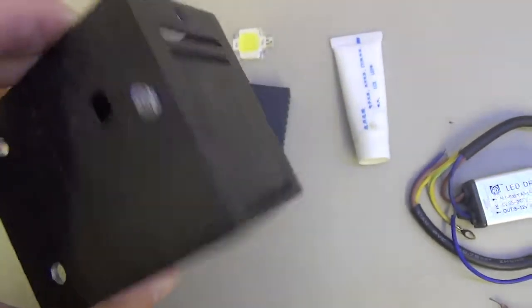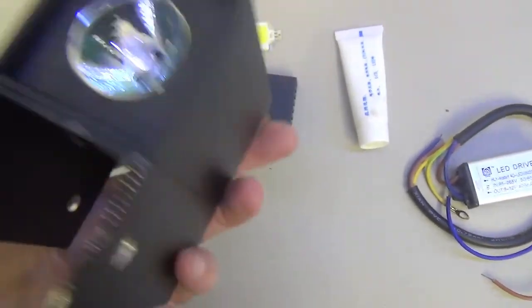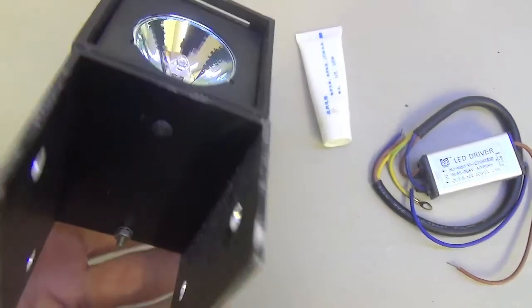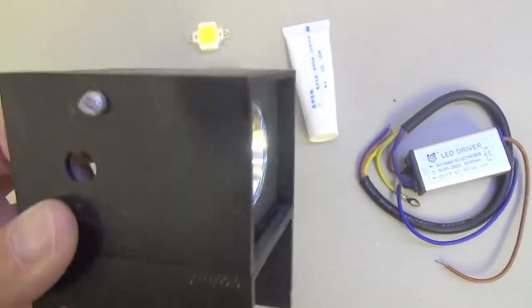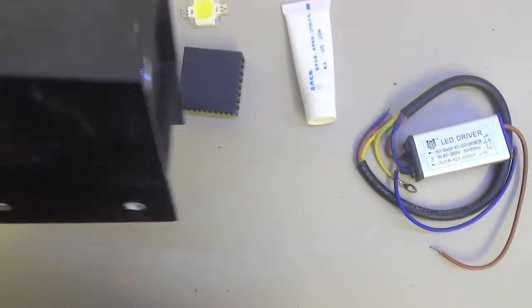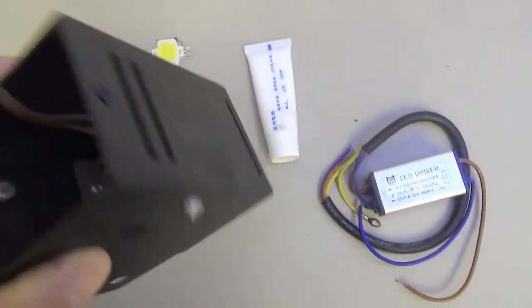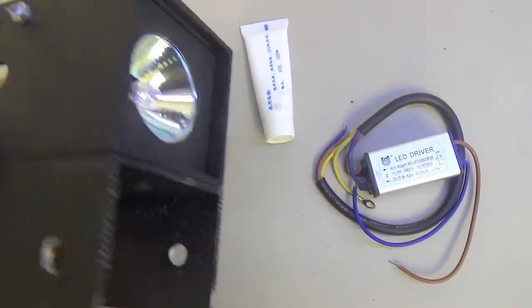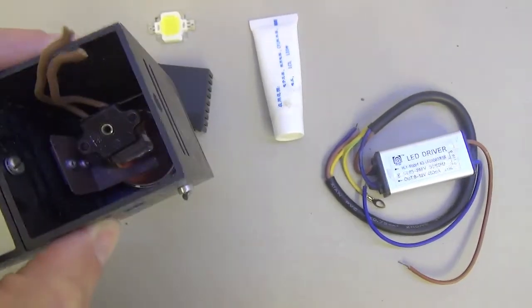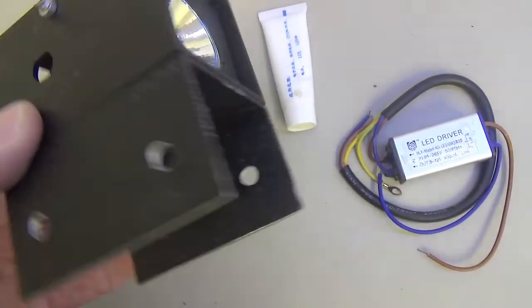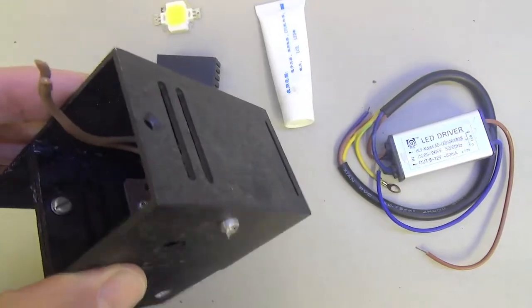And this is the original halogen unit which I'm about to take apart to probably cannibalize it to make a new stand inside for the new heat sink and lamp, rather than make something from scratch. Because no one's ever going to use halogen bulbs again in this situation.